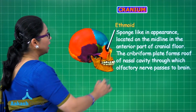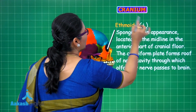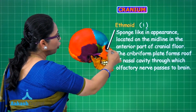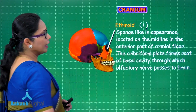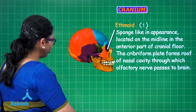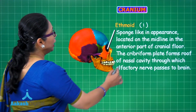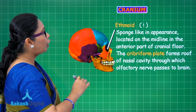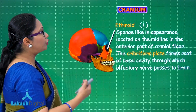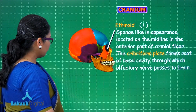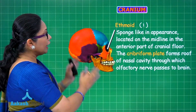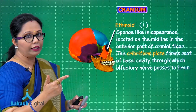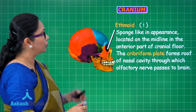The ethmoid is a single, sponge-like bone. It forms the side of the eye orbit and part of the floor of the cranium. Where it forms the cranial floor it has a structure called the cribriform plate, which has numerous apertures through which the branches of the olfactory nerve pass to the brain. In summary, of the eight cranial bones, two — temporal and parietal — are paired, and the rest are unpaired.